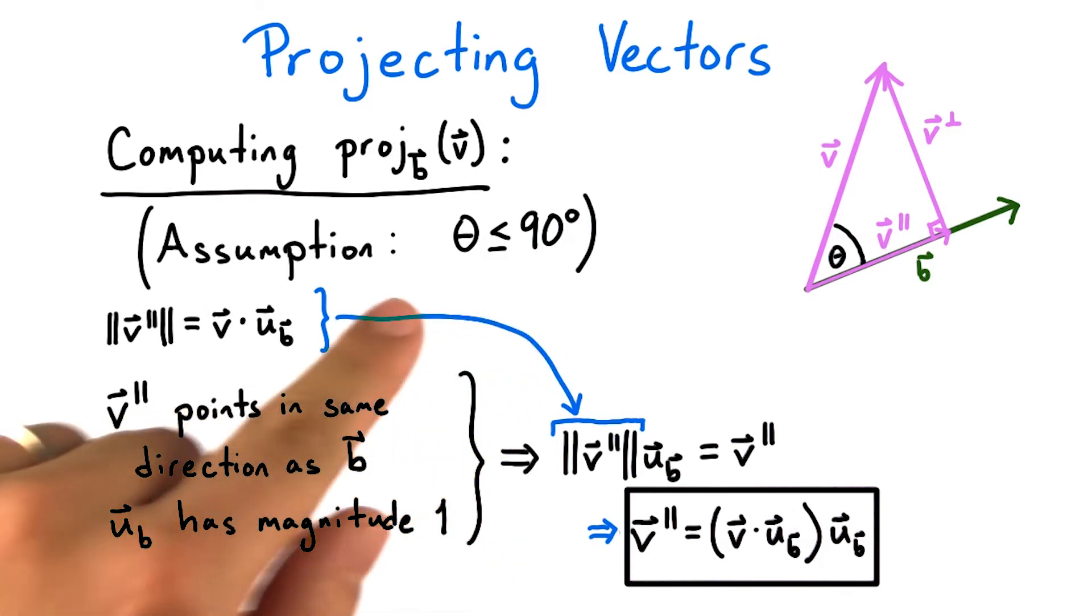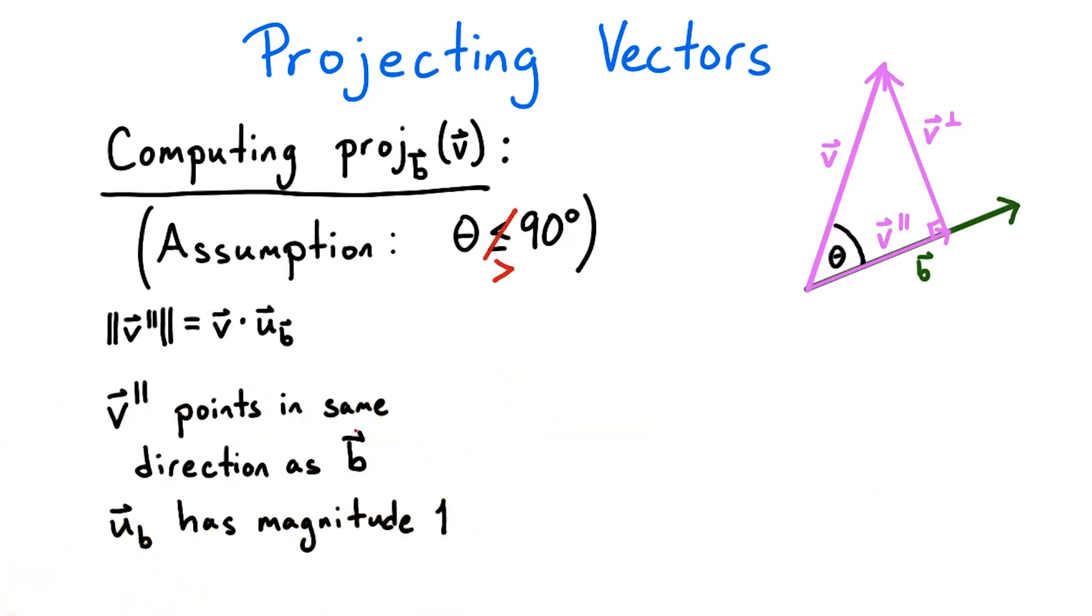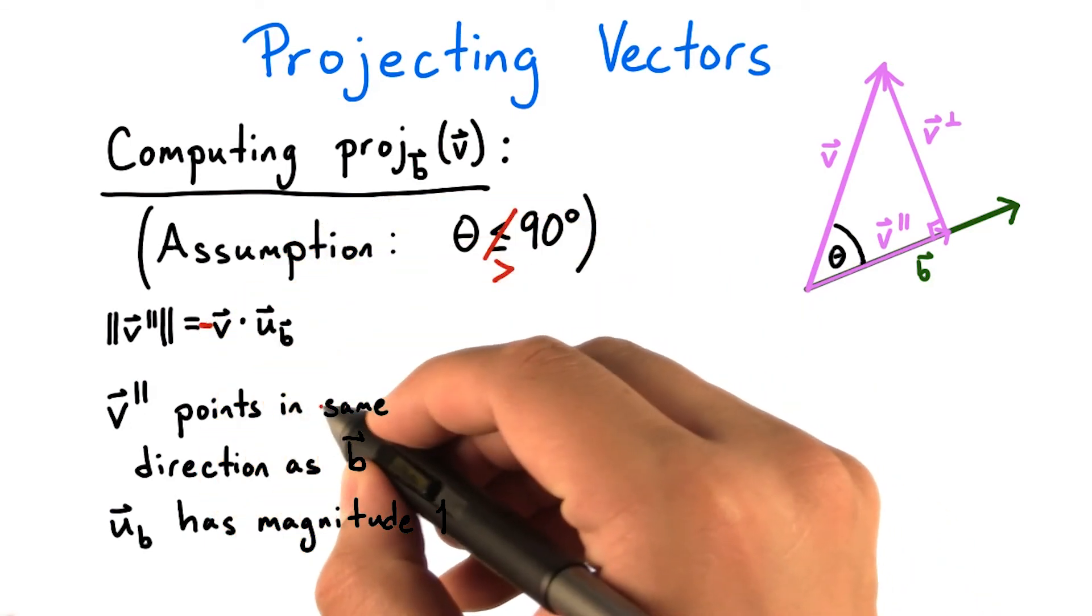Now what if we didn't make this simplifying assumption? What if theta were greater than 90 degrees? That negative sign from earlier will carry through all the way to this expression here. We'll also have to make a change here because v parallel will now point in the opposite direction of b.